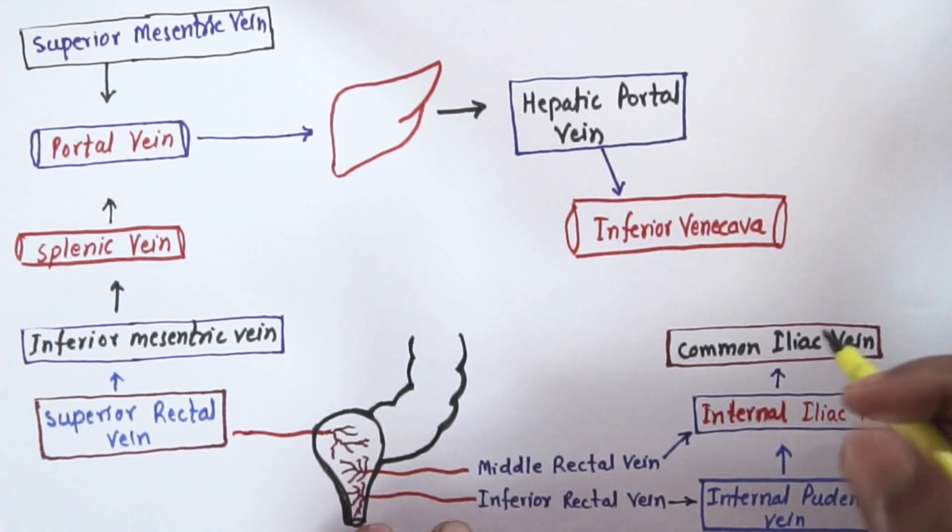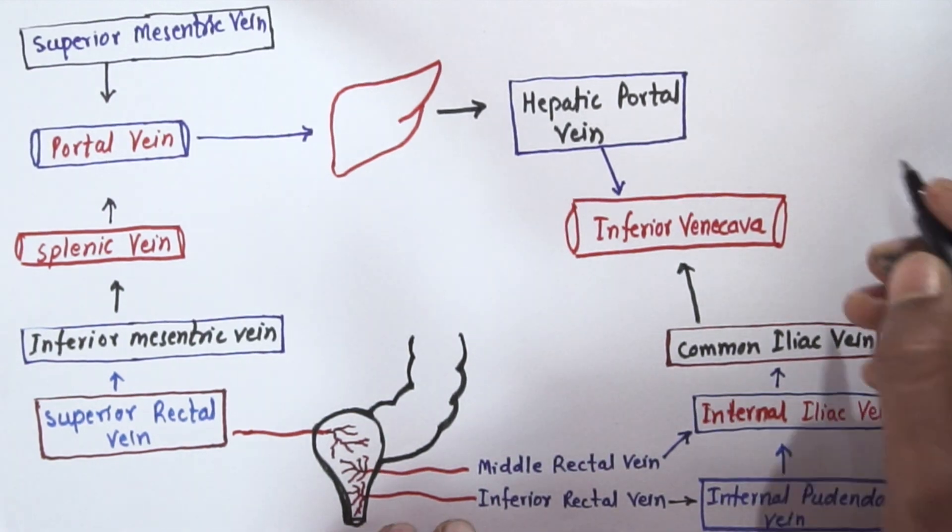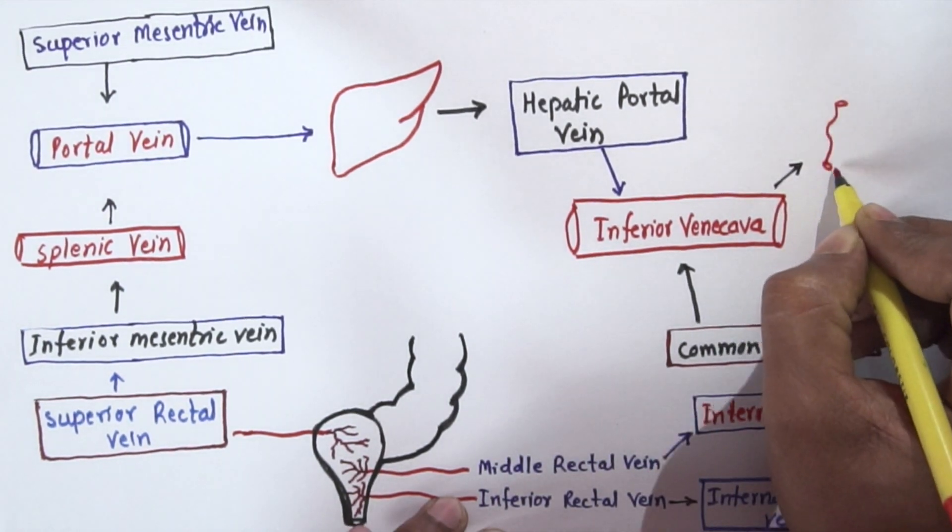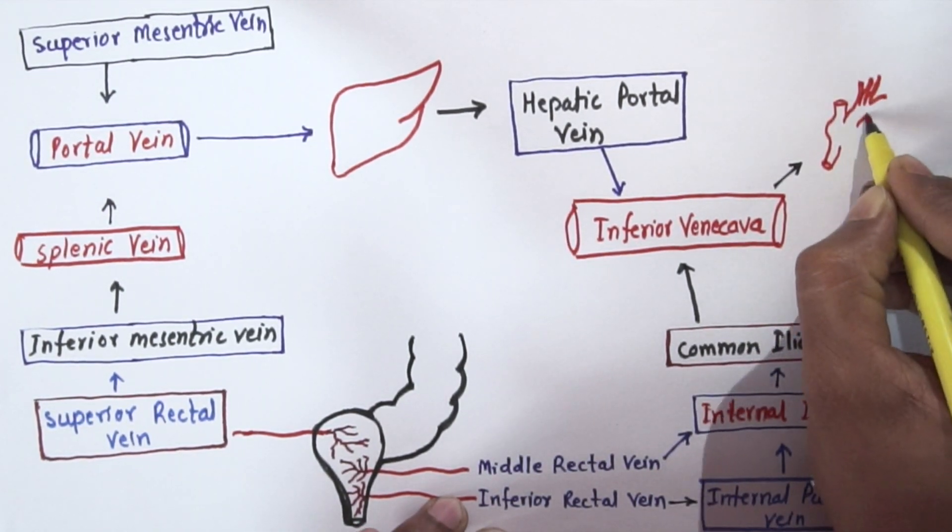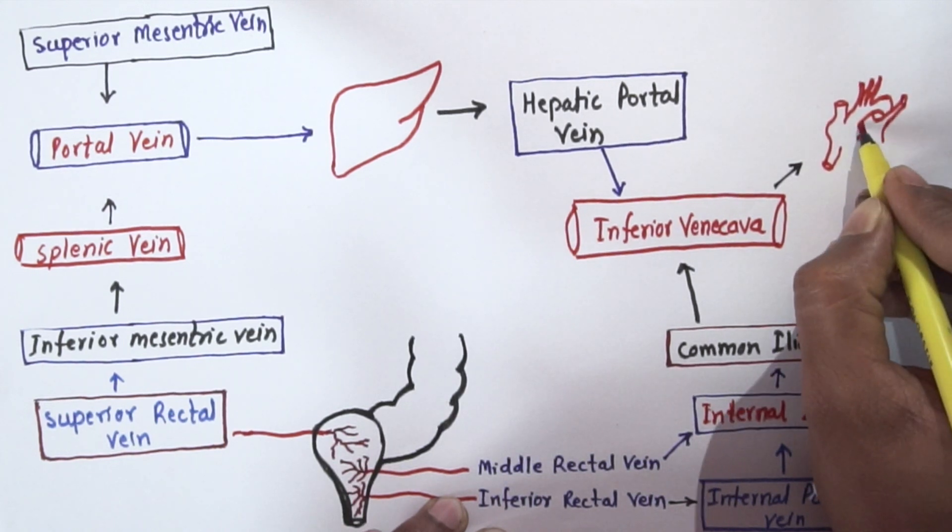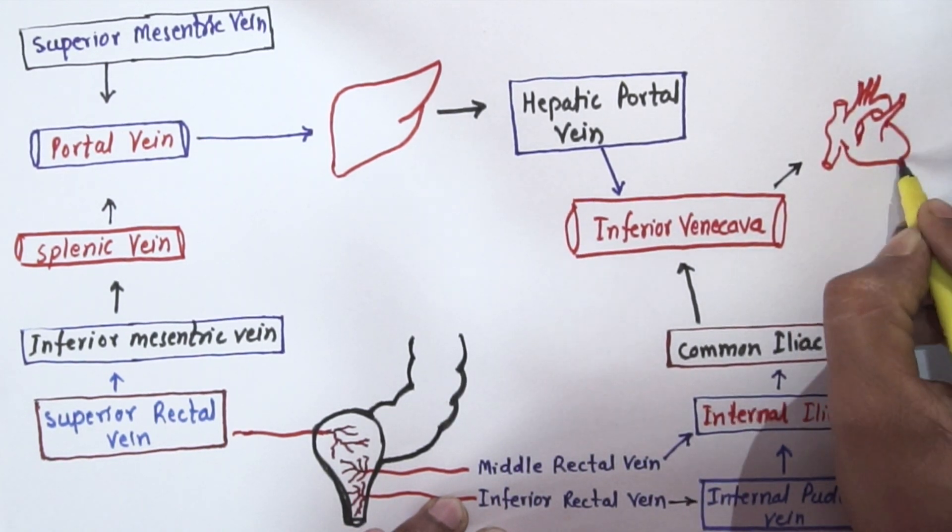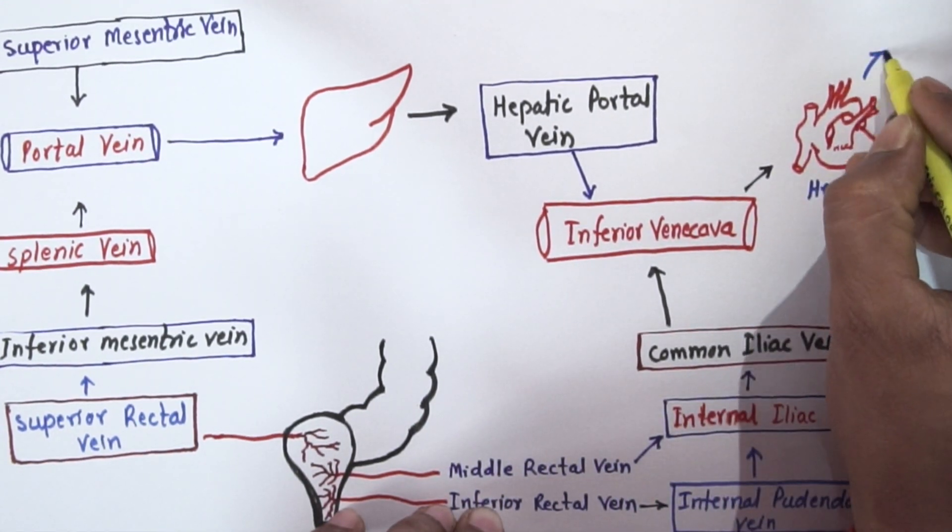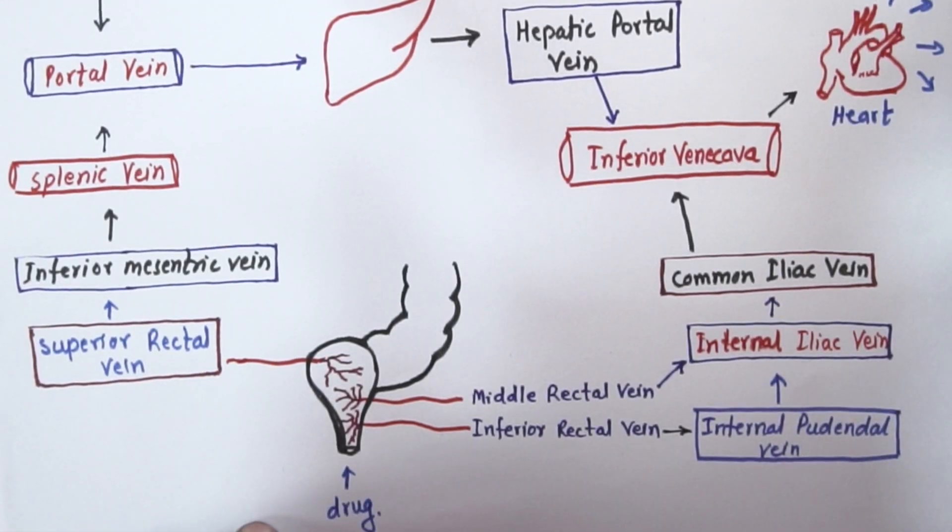Now this portal vein will go to liver, and from liver it will emerge out as hepatic portal vein. This hepatic portal vein will merge into inferior vena cava. The blood from common iliac vein also drains into inferior vena cava, and this inferior vena cava will bring blood to the heart, and from here it will be distributed throughout the body.